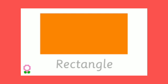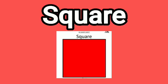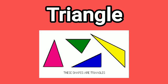Now we'll see the rectangle. The opposite sides of a rectangle are of equal length. A rectangle has four sides and four corners. Then, the square — all the edges of a square are of equal length. The four sides are the same length and are parallel to each other.